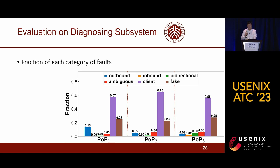For the diagnosing subsystem, we counted the fraction of each fault category in each POP. We found that the fractions in each POP are similar and more than 50% of the faults are client faults. This is possibly because the middle network in our country is well engineered and adequately provisioned, so middle faults occur less frequently. We also found that the fraction of outbound faults is far larger than that of inbound faults, possibly because there is much more user download traffic than upload traffic, making the outbound path more likely to be congested.